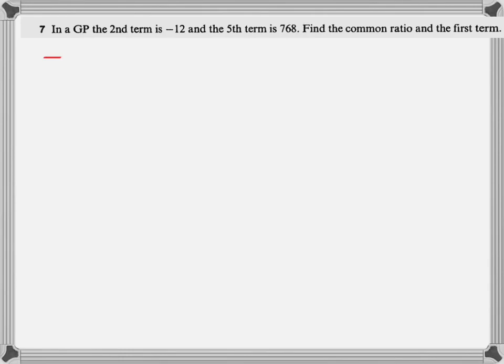Now let's look at a question where the first term A and the common ratio R are both unknown. In a GP, the second term is negative 12 and the fifth term is 768 — find the common ratio and the first term. We know Tn equals AR to the power of n minus 1. The second term means AR, and the fifth term means AR to the power of 4. Two equations with two unknowns can be solved simultaneously, but this must be solved using substitution, not elimination.